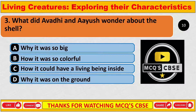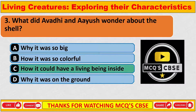What did Avadi and Ayush wonder about the shell? The correct answer is C — how it could have a living being inside.